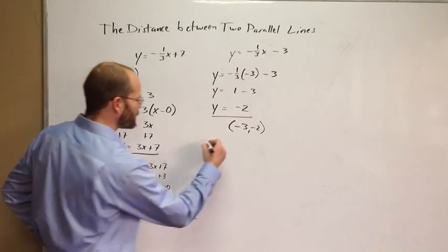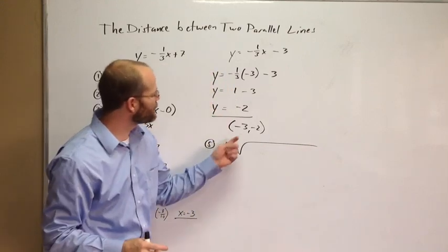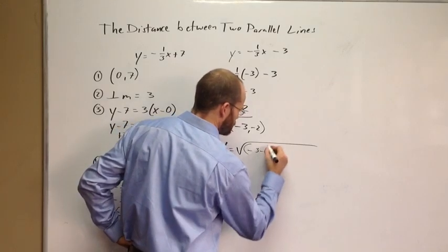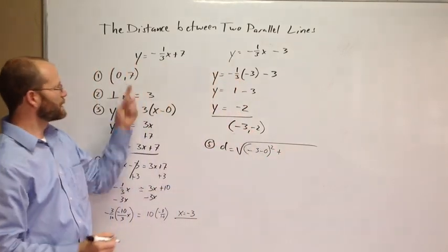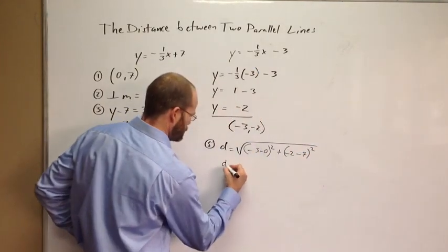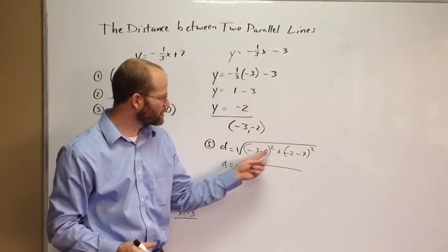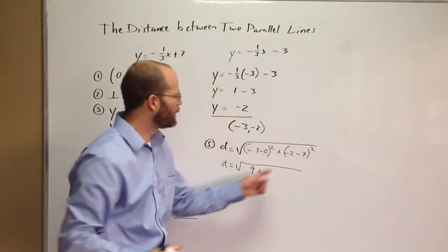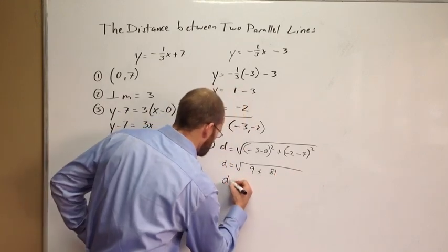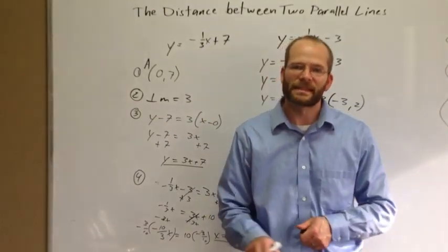Finally, step five — use the distance formula. D equals the square root of (negative 3 minus 0)² plus (negative 2 minus 7)². That's the square root of 9 plus 81, which equals the square root of 90. And as always, if you have any questions, please send me an email.